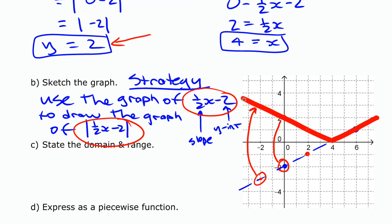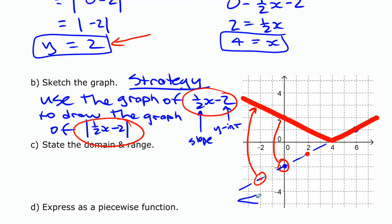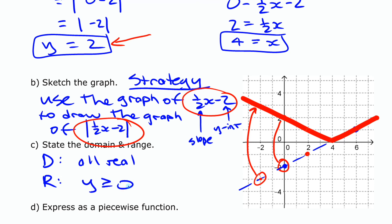Looking at the domain and range: the domain stays the same — any x value is okay, so the domain is all real numbers. But now that we've reflected the negative part up above, the range changes to only non-negative numbers. So the range is y greater than or equal to 0 for that absolute value function.